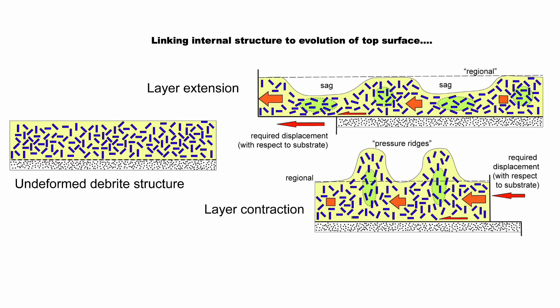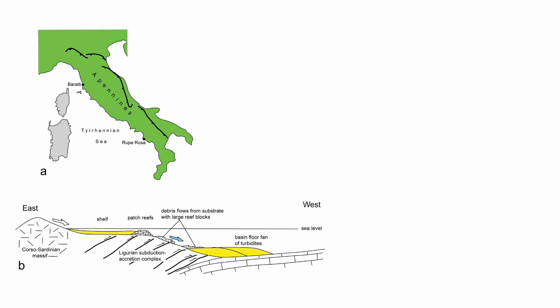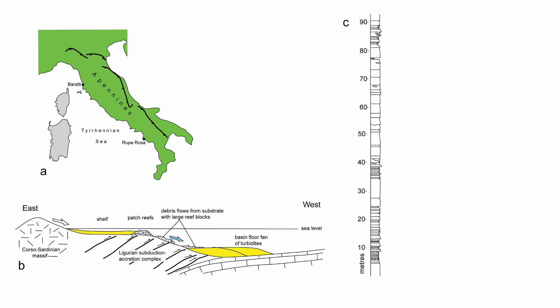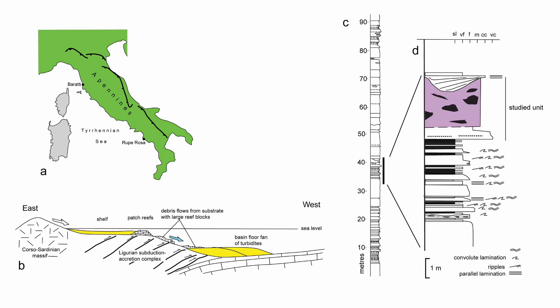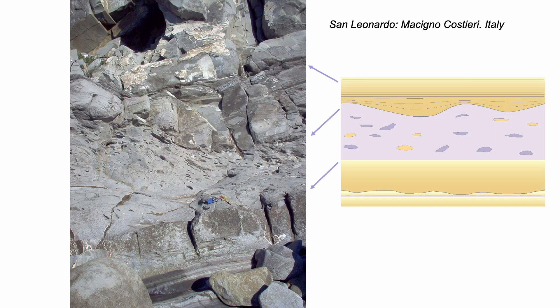So can we map strain to the shape of the top of the debrite? We'll use an example from the Miocene of Italy, where turbidites of the so-called Macigno costieri were deposited in an active basin. The turbidites contain the products of submarine landslides — debrites — and we're going to look at this one, at the headland of San Leonardo near the little port of Baratti. The debrite is bounded by turbidite sandstones and the top is hummocky or rugose.